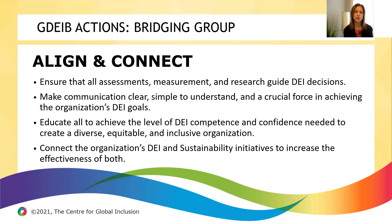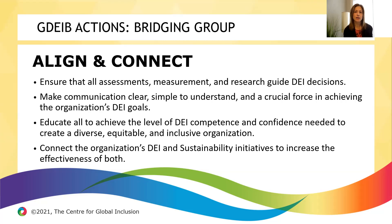The bridging group is about aligning and connecting all of the other pieces and making sure that you're assessing and measuring. We have our assessment and strongly encourage organizations to use that as their measurement tool. You also want to make sure you're clearly communicating — both internally and externally — your DEI initiative and connecting your DEI initiative to sustainability. That's one that comes up with a lot of questions, but many larger corporations bring the two together to make sure they're aligned.